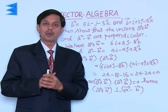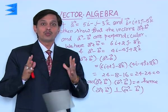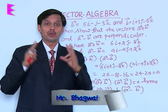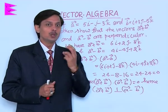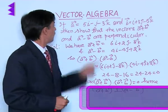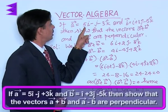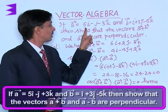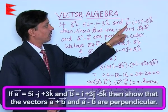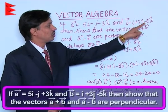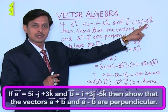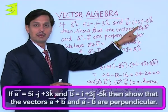I am going to discuss a problem where we will prove that two vectors are perpendicular using the condition of the dot product. The problem is: if vector A equals 5i minus j minus 3k, and vector B equals i plus 3j minus 5k — these are our two given vectors.